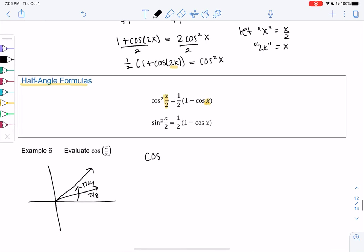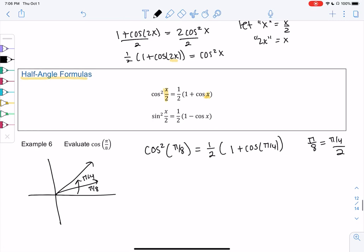So this tells me that cosine of pi over 8, let's do cosine squared, and then we can take the square root. According to this formula would be 1 half, 1 plus cosine of pi over 4, right? Because pi over 8 is pi over 4 over 2. So the half angle is nice when you have a half angle that you're trying to find out, but you know the bigger angle.